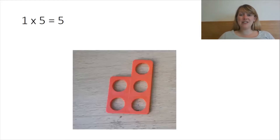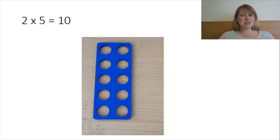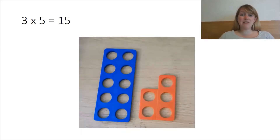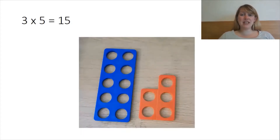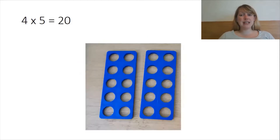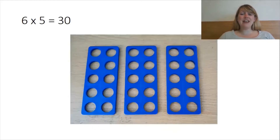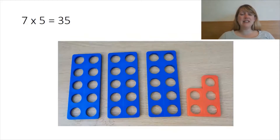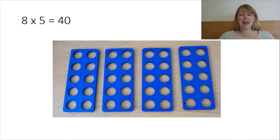1 times 5 is 5, 2 times 5 is 10, 3 times 5 is 15, 4 times 5 is 20, 5 times 5 is 25, 6 times 5 is 30, 7 times 5 is 35, 8 times 5 is 40.